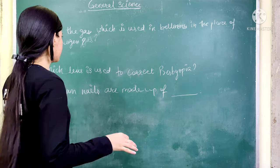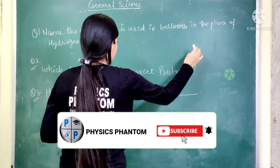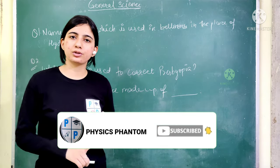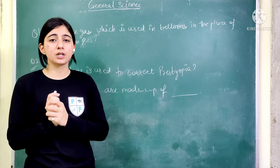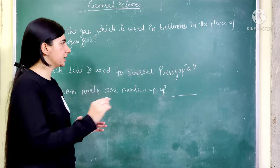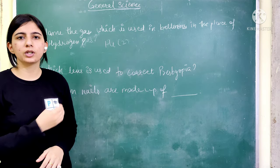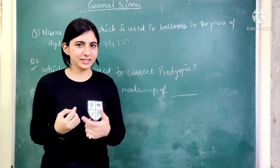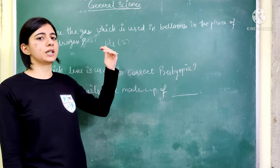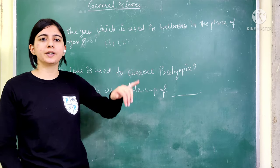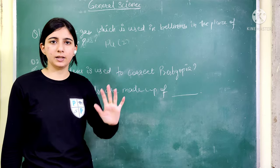The first question, as you can see on the board: which gas can we use in balloons in place of hydrogen? The answer is helium, symbol He, and its atomic number is 2. In the periodic table, helium comes at position number 2.